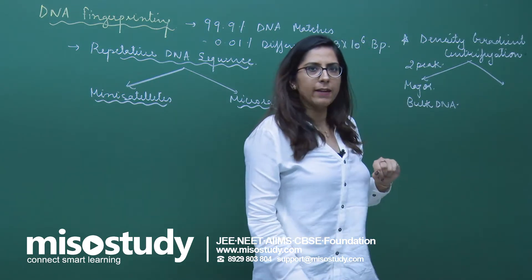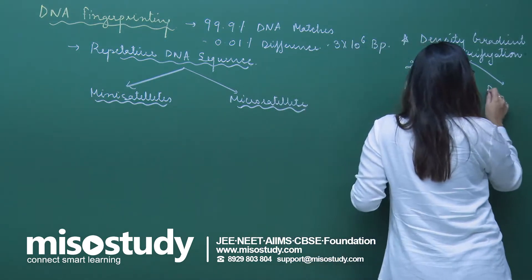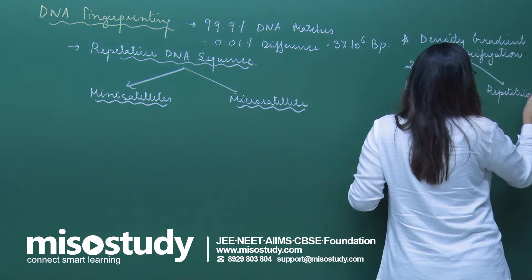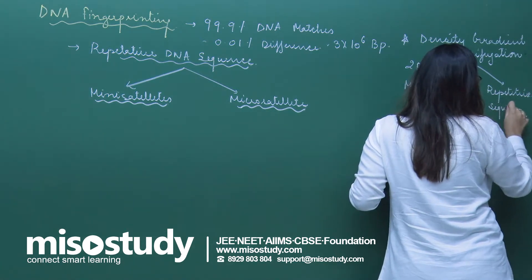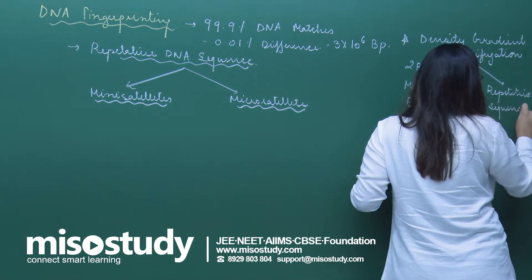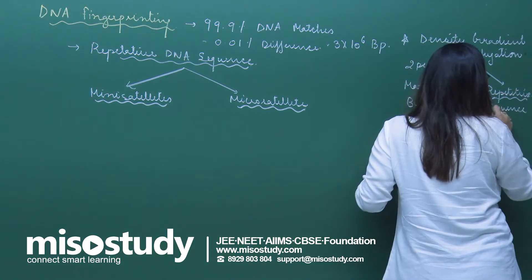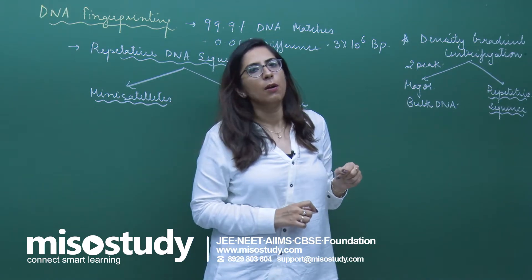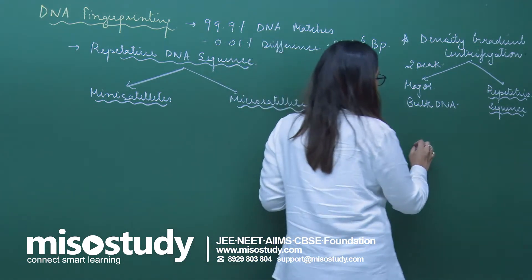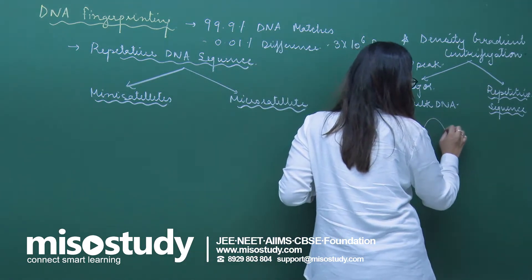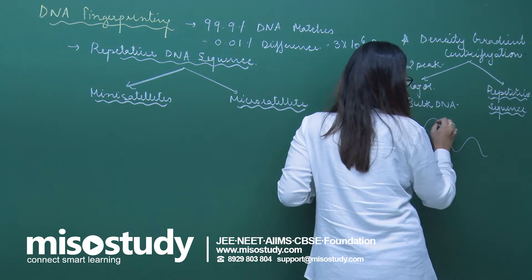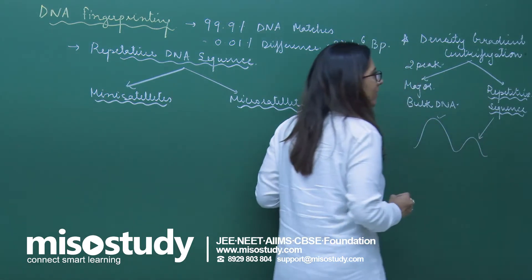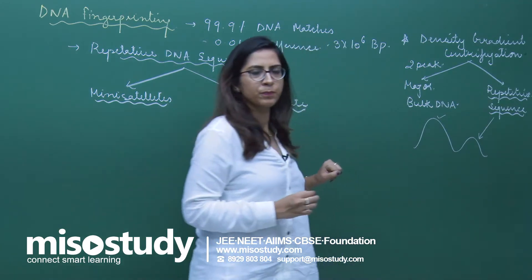The major, bigger peak is of the bulk DNA, and the rest are the repetitive sequences. These repetitive sequences are of two types: mini satellites and micro satellites. So we have two peaks — one for bulk DNA and one for repeated sequences.